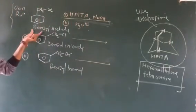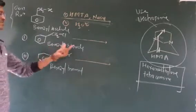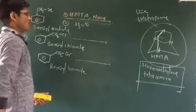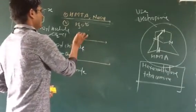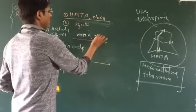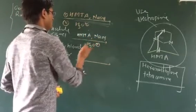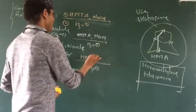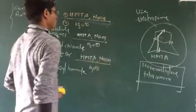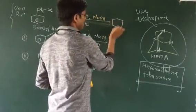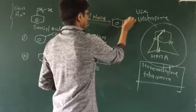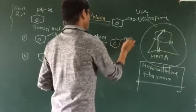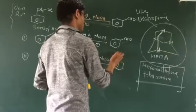Starting reaction: benzyl halide — you can take benzyl chloride or benzyl bromide — using HMTA (Hexamethylene Tetraamine), sodium hydroxide, hydrolysis in acidic condition. Formation of the product: CH2Cl is converted into CHO, CH2Br is converted into CHO.